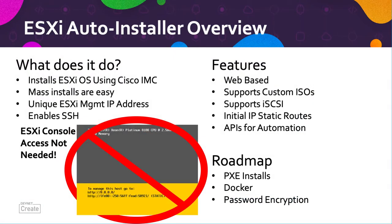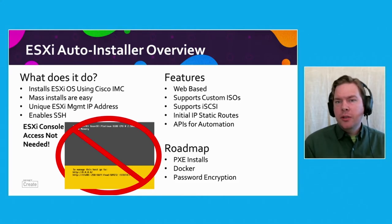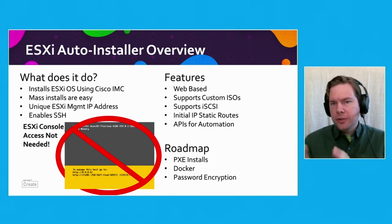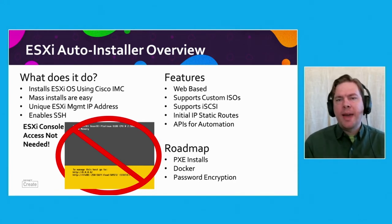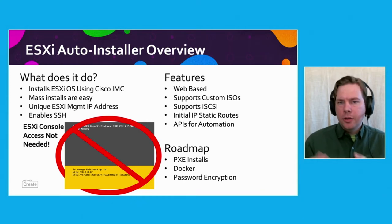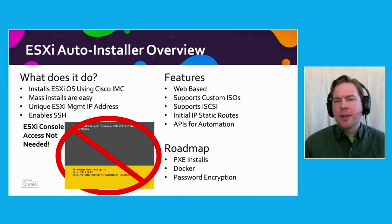If you have a specific ESXi version number or a custom ISO that you want, this tool will support that. If you want to install into an iSCSI boot drive, this tool supports that too. We also have APIs for additional automation — for example, if you have an inventory system that already has your IP addresses, you could push those to this tool using the APIs and start installations automatically. You can then check the status, and if there are installation errors, you could send notifications, or if the installation is successful, you could start your additional management or automation.